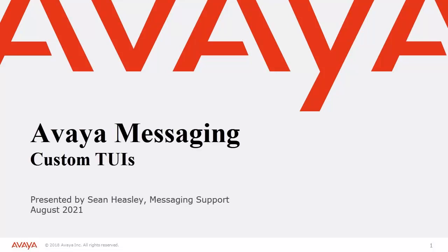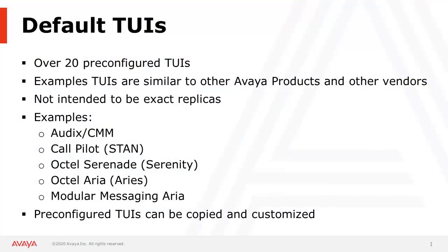Hello, my name is Sean Heasley with the Avaya Messaging support team, and this video is about custom TUIs on the Avaya Messaging system. Avaya Messaging comes with over 20 pre-configured telephone user interfaces, emulating other Avaya products as well as other vendors. The current TUI configurations are based on customer requests and feedback throughout the lifecycle of this product.